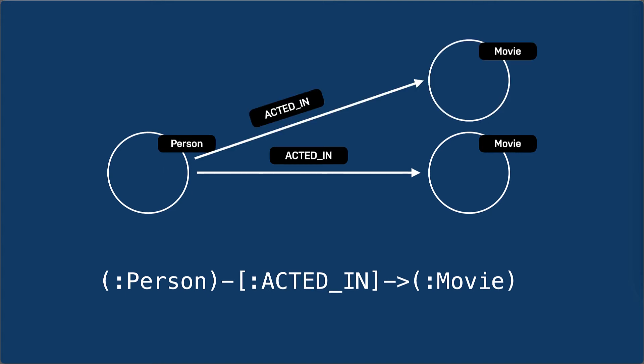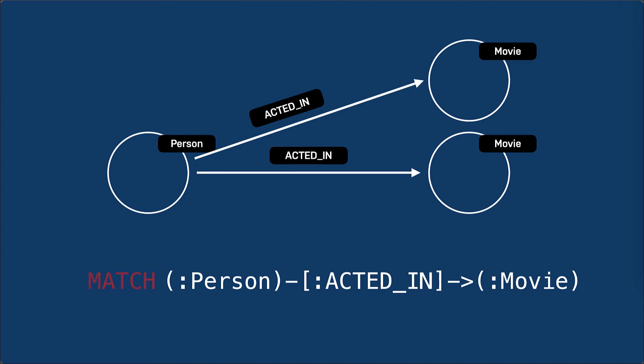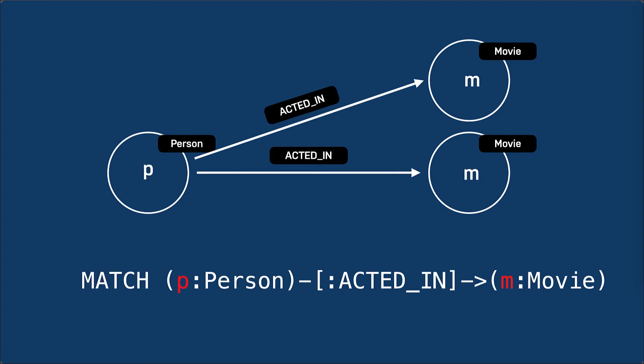The most important Cypher clause you will use is MATCH. MATCH retrieves nodes from the graph using the pattern you have specified. Most Cypher MATCH clauses use variables. The variables here are P and M, and they represent references to the person and movie nodes that are retrieved in the MATCH clause. You use variables when you want to use these node references later in the query processing.